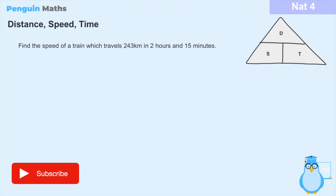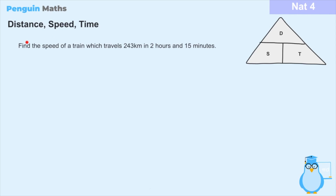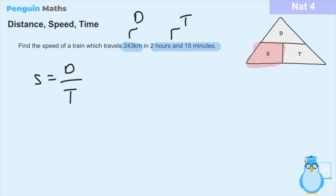The next question asks us to find the speed of a train that travels 243 kilometers in 2 hours and 15 minutes. Step one: we're asked to find the speed. The question gives us the distance and the time. So the relationship is: speed equals distance divided by time. Next, we consider the units — our distance is in kilometers and our time is given in both hours and minutes.